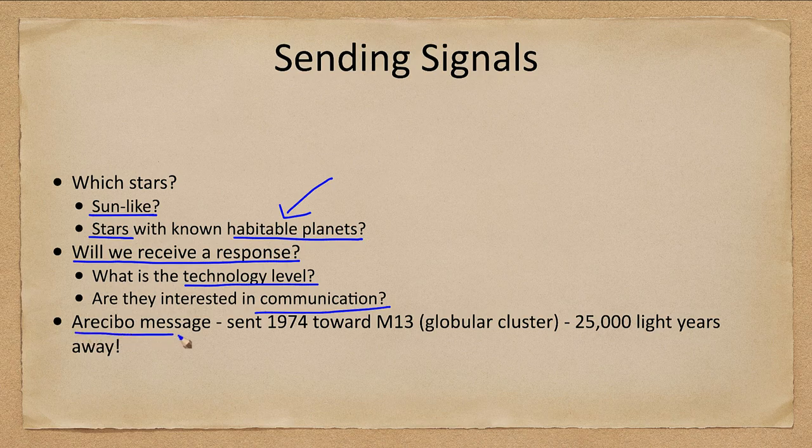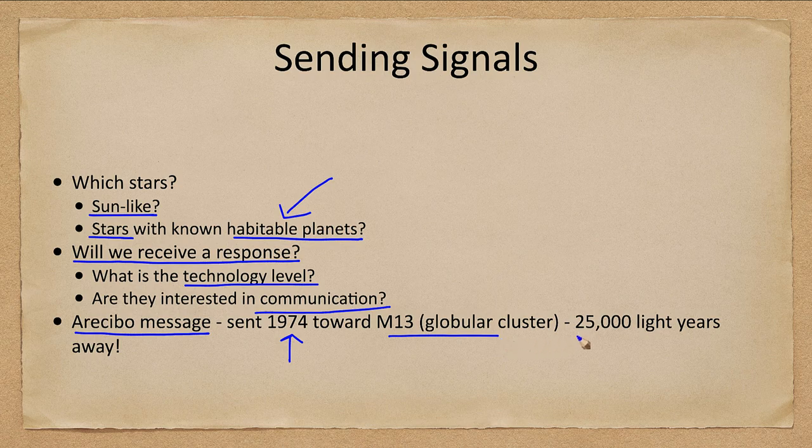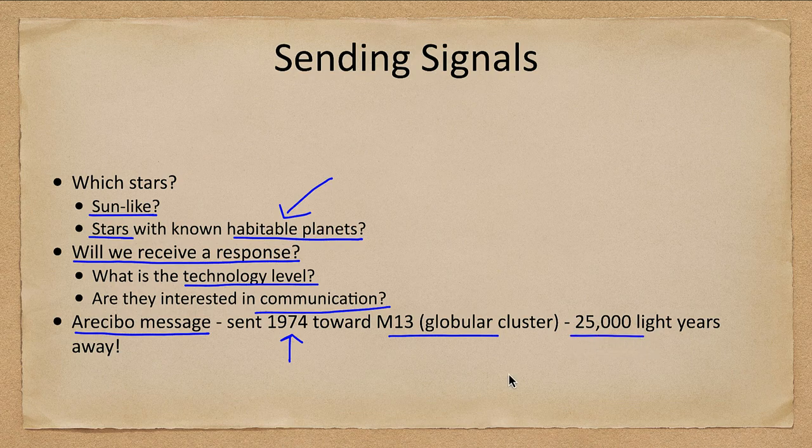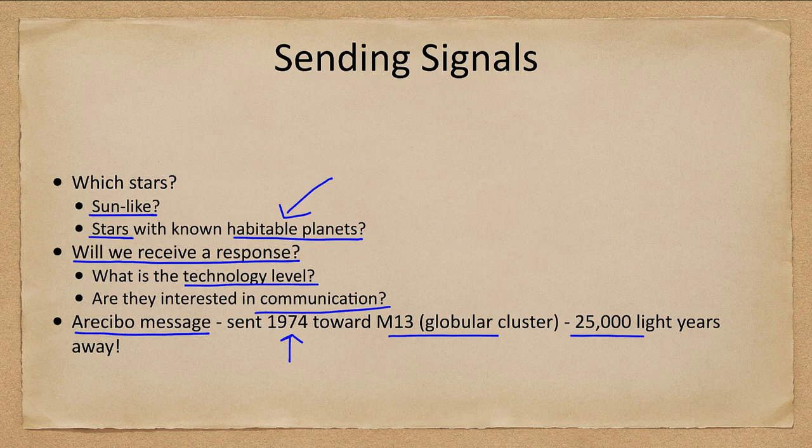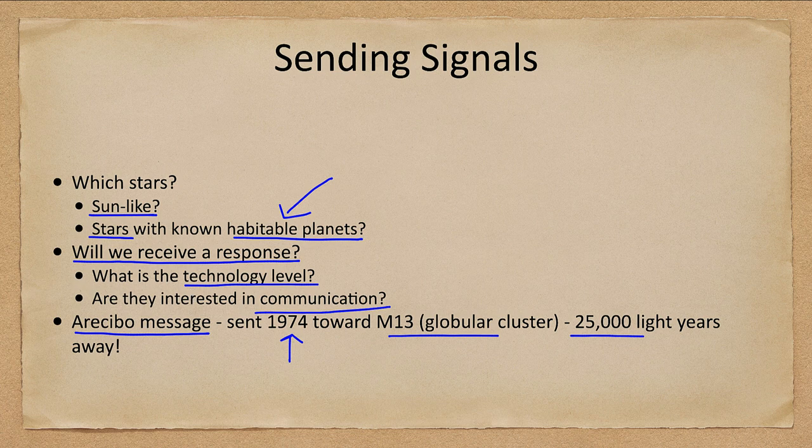We did send a message in 1974. The Arecibo sent a message toward a globular cluster known as M13, which would have a hundred thousand stars. So sending it in the direction of all these stars at once, but it is 25,000 light years away. So while we sent it, it would take 25,000 years for it to get there. It still barely started its journey. And if someone did respond, it would take another 25,000 years for that response to get here.